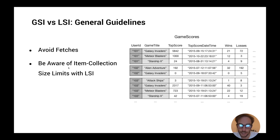The second best practice is to be aware of item collection sizes with local secondary indexes. An item collection is the collection of all items with the same partition key. For example, an item collection would be all items sharing the same user ID. The size limit for an item collection on a local secondary index is up to 10 gigabytes.